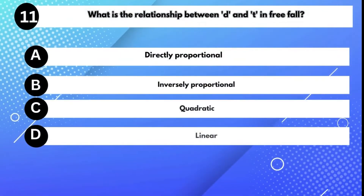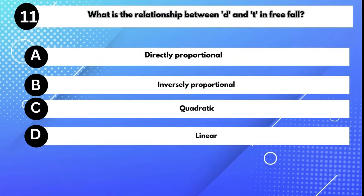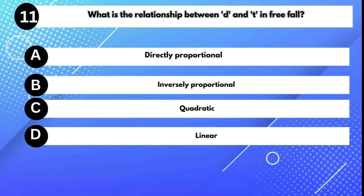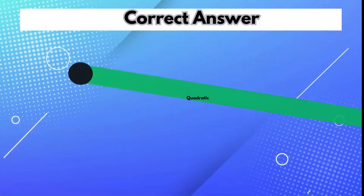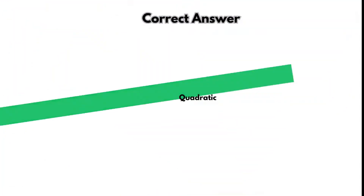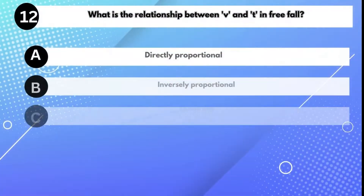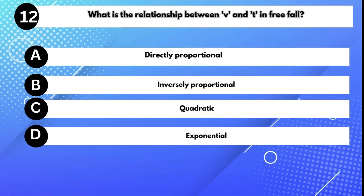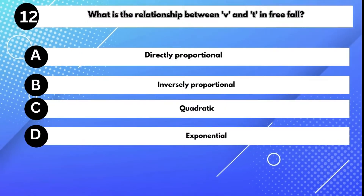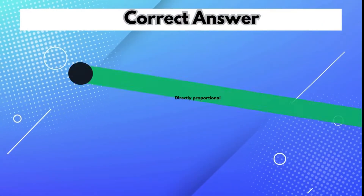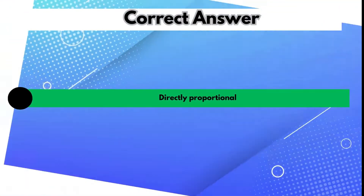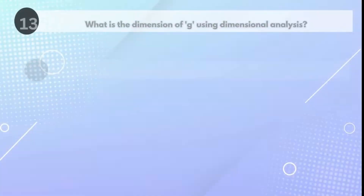What is the relationship between D and T in free fall? Answer C: Quadratic. What is the relationship between V and T in free fall? Answer E: Directly proportional.